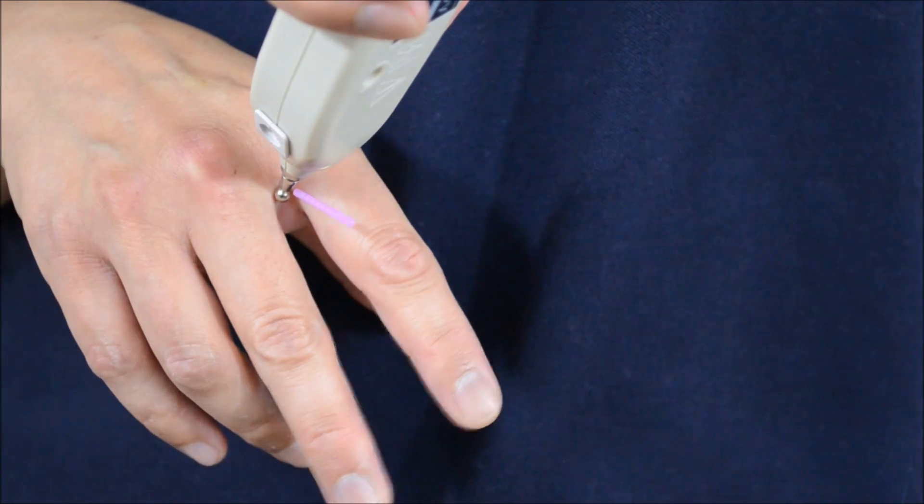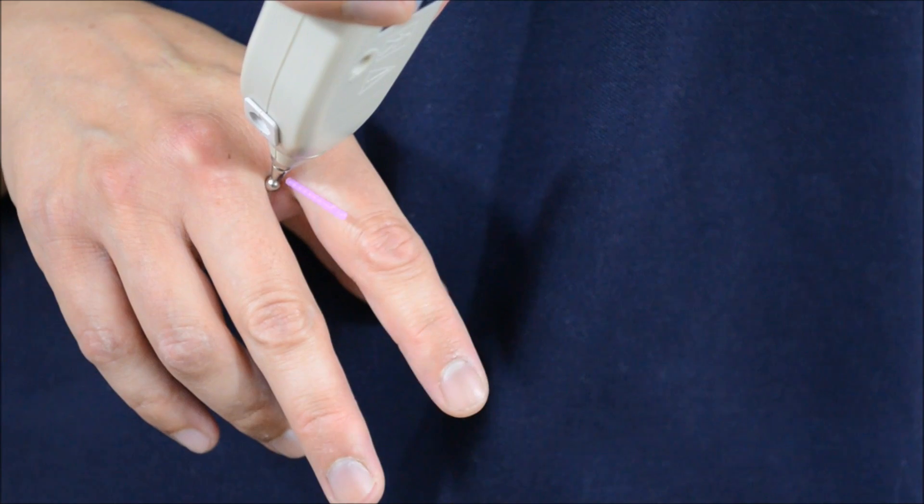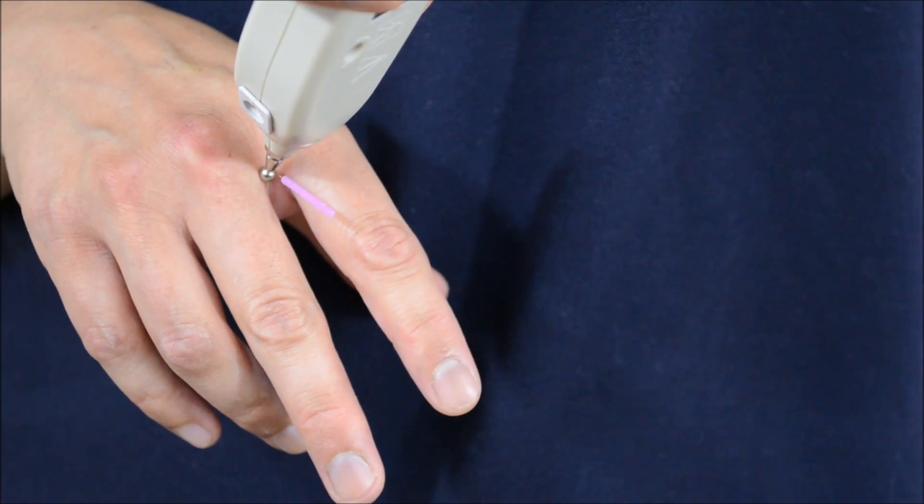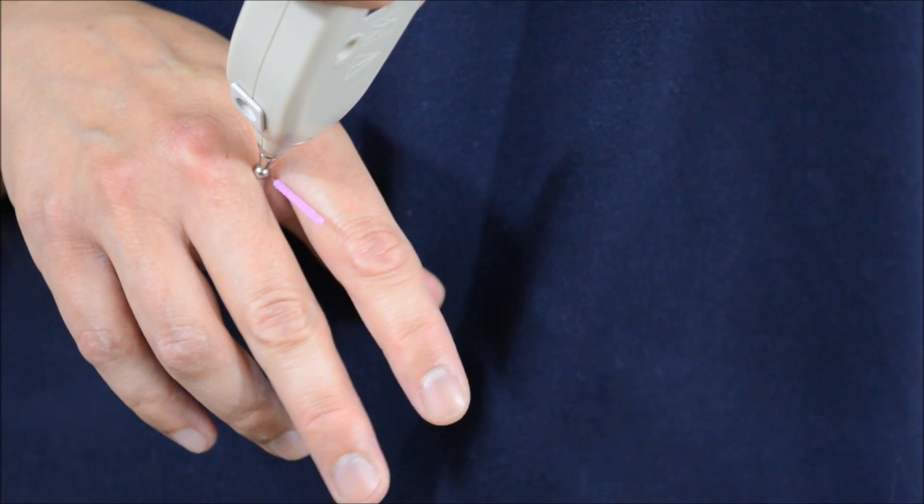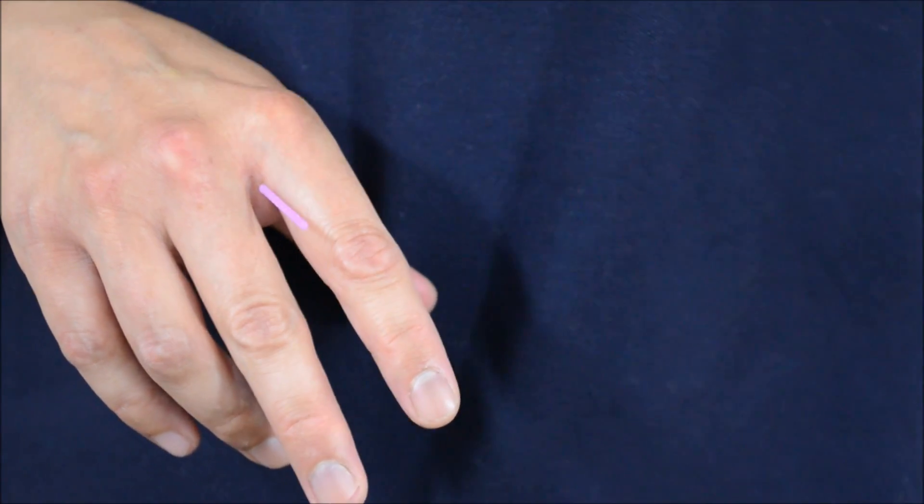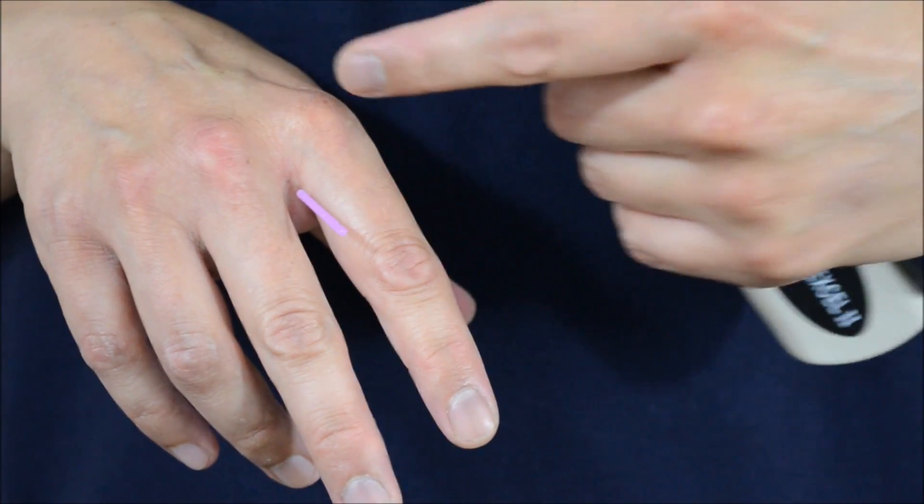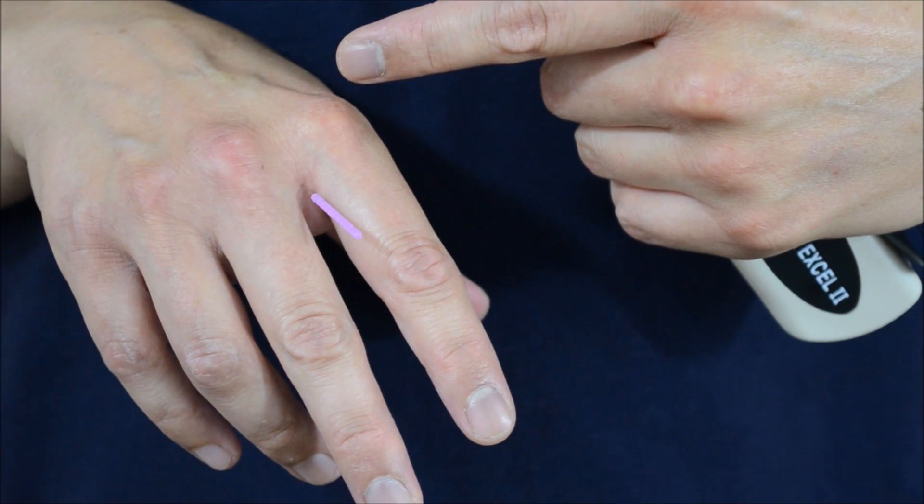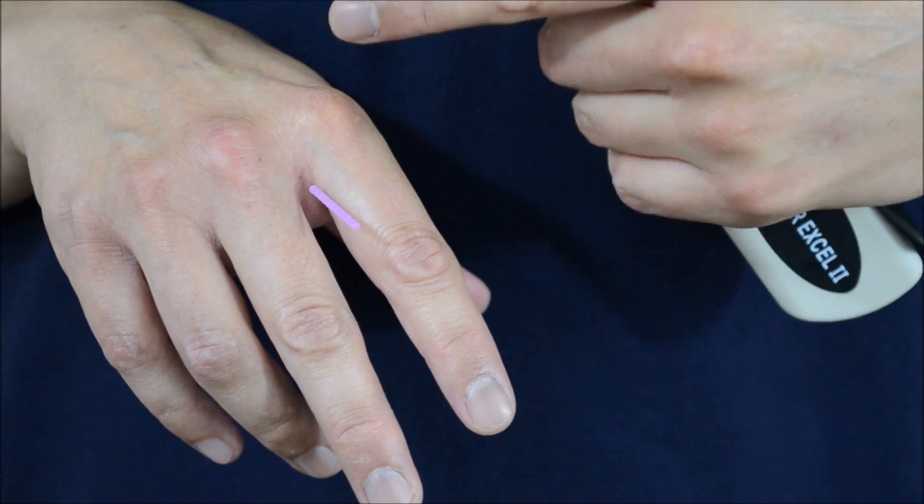So what you're seeing right now is you're seeing the middle finger abduct, move towards the index finger, and you're seeing the index finger adduct as it's going towards the middle finger. So we're effectively stimulating both the dorsal interossei and the palmar interossei.